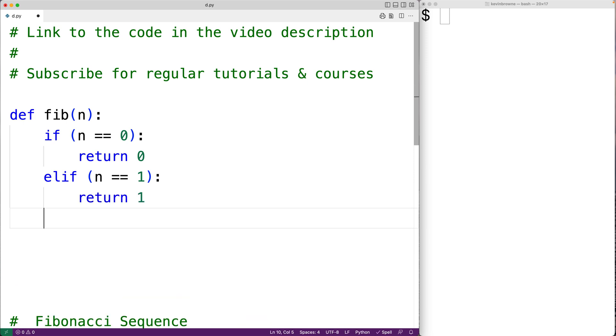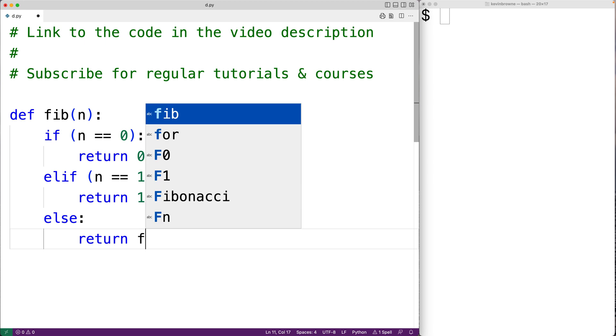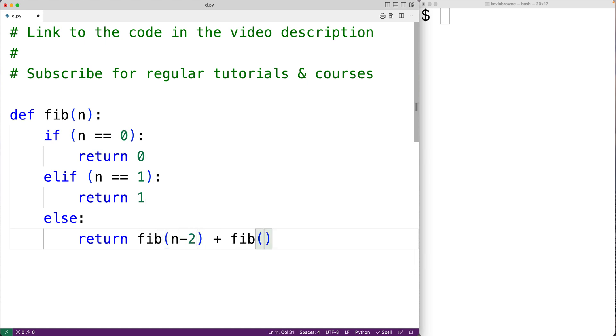And then for terms greater than 1, we're going to define those terms using the previous terms in the sequence. So we're going to have return fib(n-2) plus fib(n-1). And here's where we're using recursion because we're calling the function with the term n-2 and the term n-1, and then we're going to sum together those results.